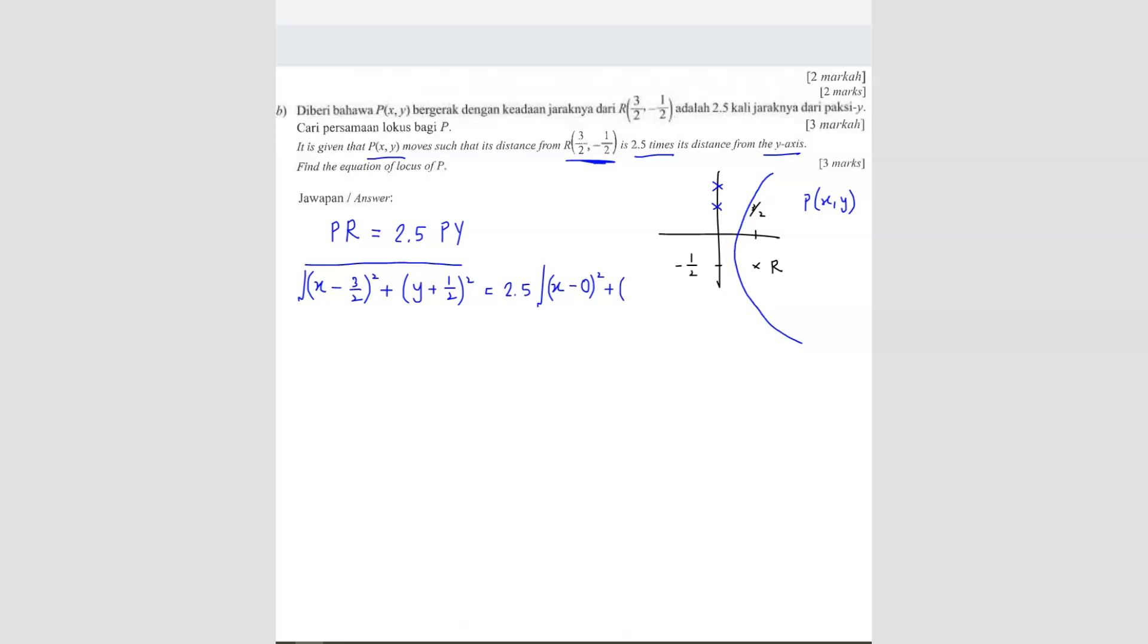We are finding the distance between P and Y. So P is the locus on this line. At any point, the distance is going to be the same. The Y value is going to be the same. Even if I take this point, the Y value is always going to be the same. So in other words, you can write Y minus Y, so you will cancel it.